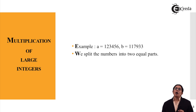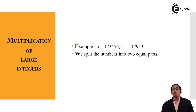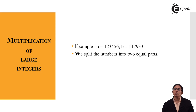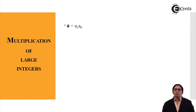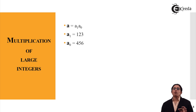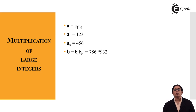We split this number into two equal parts when using a divide and conquer approach. Divide and conquer always works on splitting the whole real problem into small sub-problems. So when applying the divide and conquer approach to large integers, I will automatically split it into two parts. My number a will be split into a1 and a0, where a1 = 123 and a0 = 456. Similarly b is split into b1 = 786 and b0 = 932.